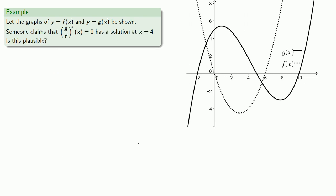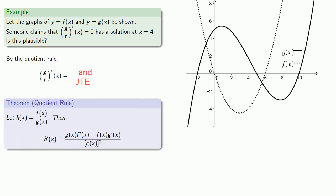A little bit later on we'll be interested in knowing where a derivative is equal to 0. So given this graph, suppose somebody claims that the derivative of g over f of x equals 0 has a solution at x equals 4. Is this a plausible claim? Let's consider what that derivative is going to look like — we'll use the quotient rule.